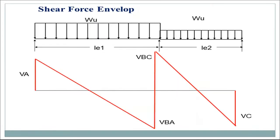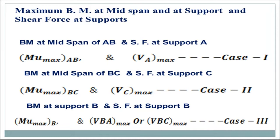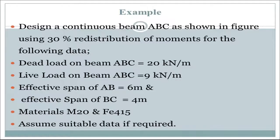Similarly, we consider the shear force envelope. Here I have shown only the maximum shear force. From Case 1 we get VA; from Case 2 we get VC; and from Case 3 we get the shear force at continuous support — VB to A and VB to C. This gives the maximum bending moment and shear force from all three cases.